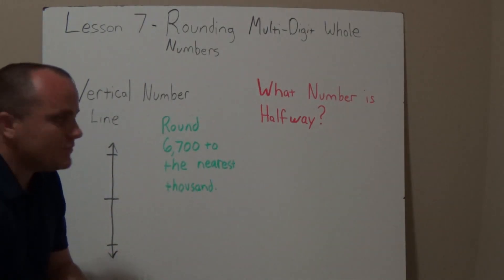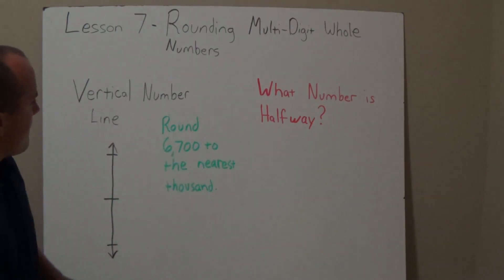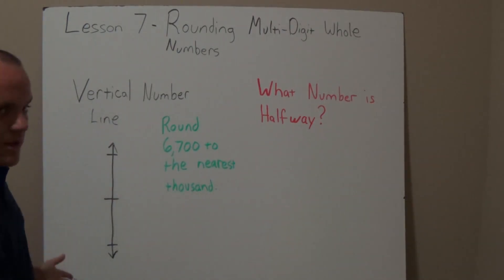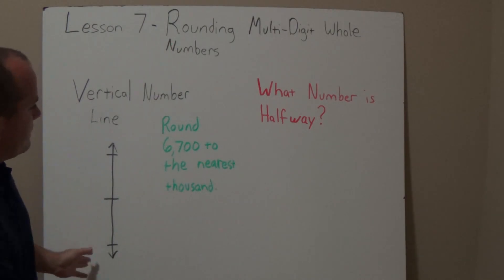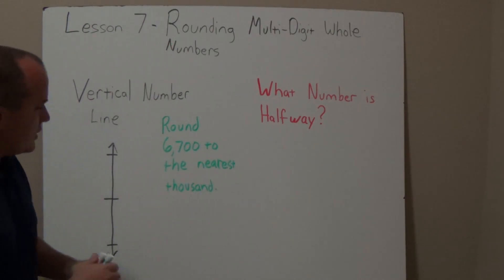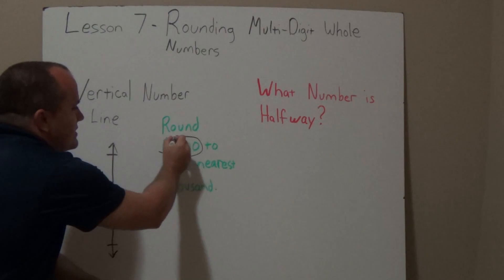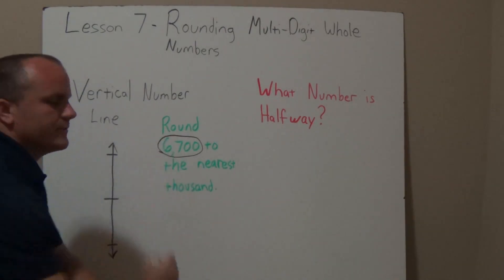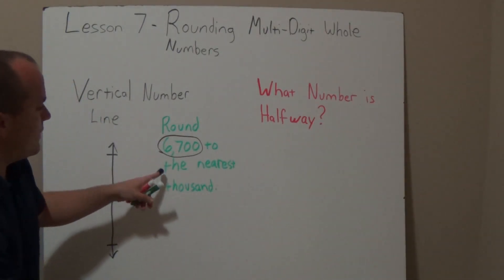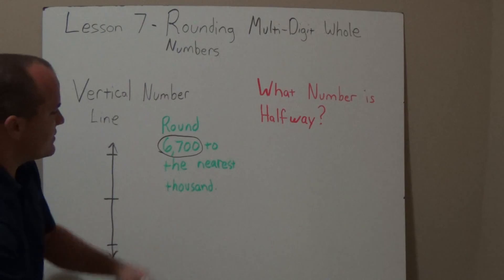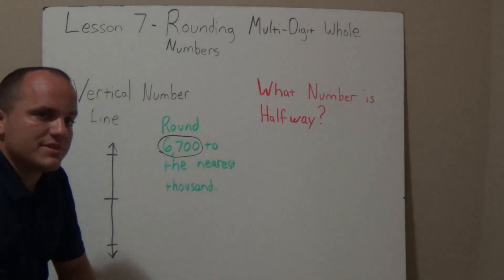What we're going to do to help us round this number is use what's called a vertical number line. When we're using a vertical number line, we're going to take a look at our number, 6,700. We want to think about what we're looking for — the nearest thousand. So I want to ask myself: which digit is in the thousands place?